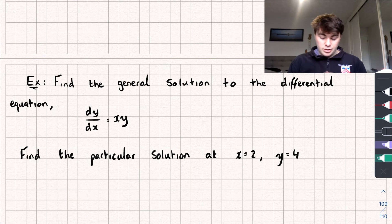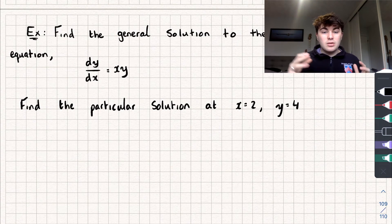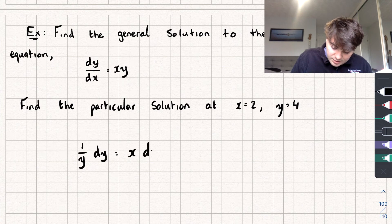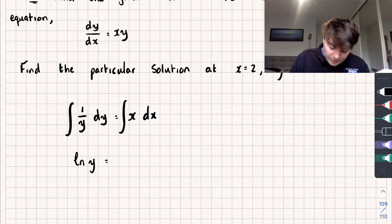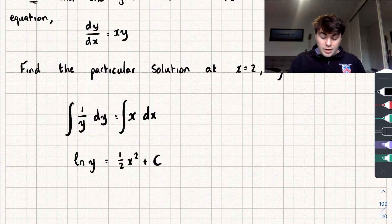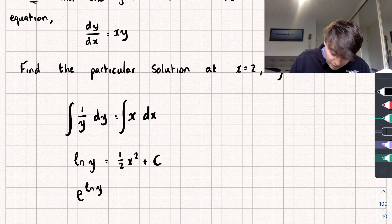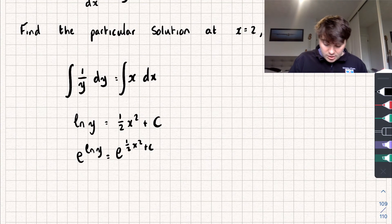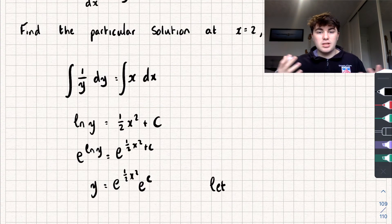Let's look at an example question where we find both the general and particular solution. We need to solve dy/dx equals xy. Using separation of variables, dividing both sides by y gives (1/y) dy equals x dx. Integrating both sides: the integral of 1/y with respect to y is the natural log of y, giving ln(y) equals one half x squared plus c. Rearranging to make y the subject, we raise e to the power of both sides: e to the ln(y) equals e to the power of (half x squared plus c), so y equals e to the half x squared multiplied by e to the c.